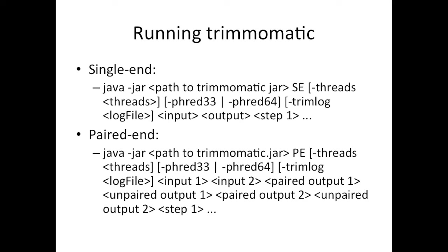If you want to keep a log of all the reads that were trimmed and how much was kept or trimmed from the beginning and end, you will specify a trim log. It doesn't hurt to specify this because then you at least have documentation of how this was trimmed in case you trim things different ways. Then you give it, in the case of single-end, your input file, or for paired-end, your input forward and input reverse, and then your output files in the same way — paired and unpaired output in forward and paired and unpaired output in reverse.